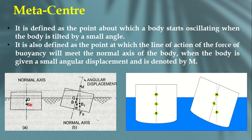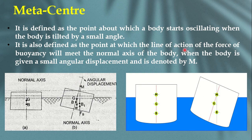G is the center of gravity and B is the center of buoyancy. If I tilt the object to the right and release it, the body starts oscillating about the normal axis. The point about which the body starts oscillating is called the meta center. Another definition: it is the point at which the line of action of the force of buoyancy meets the normal axis of the body when the body is given a small angular displacement.